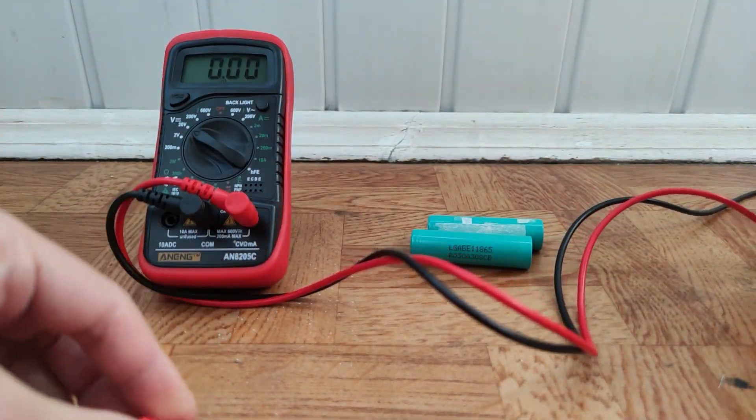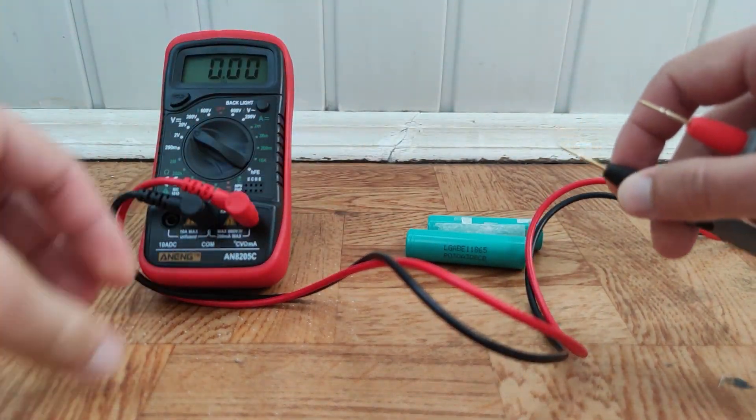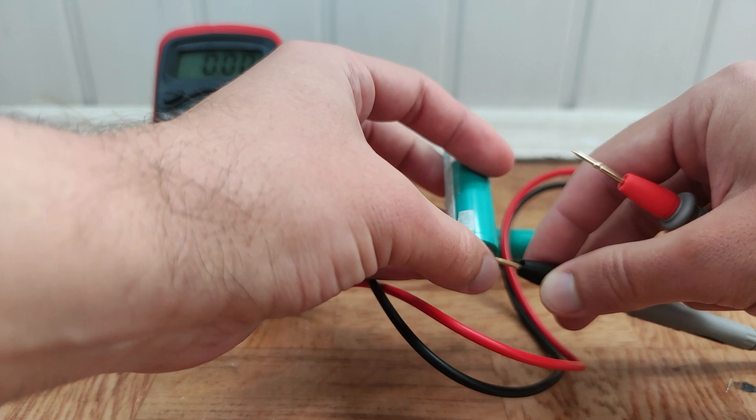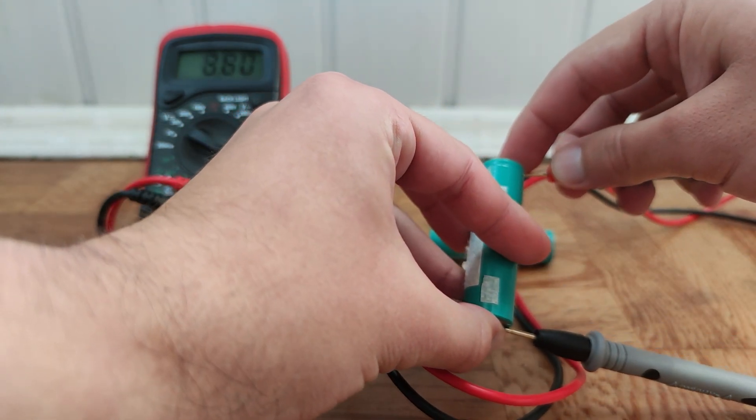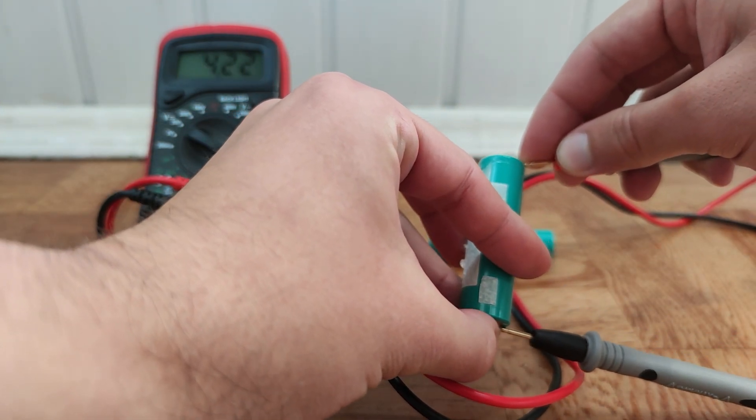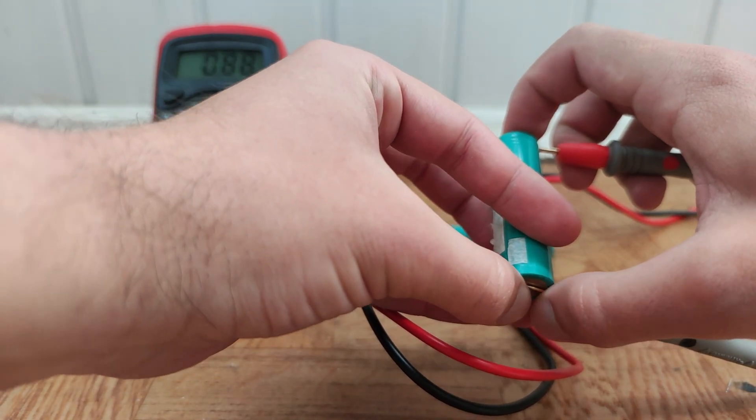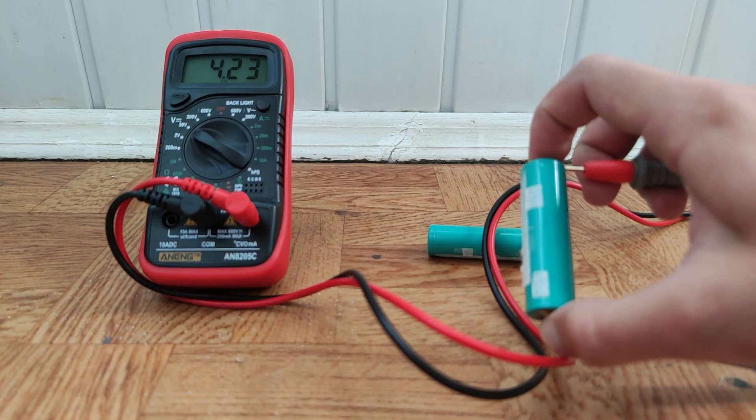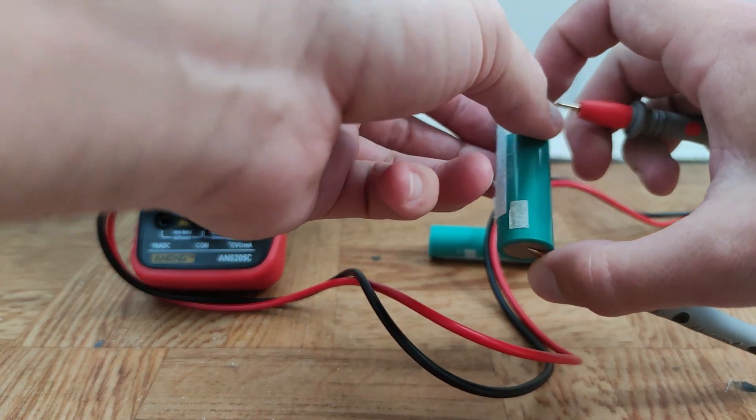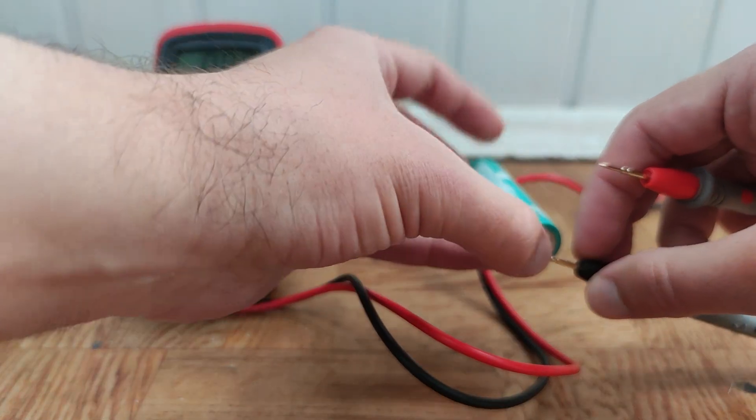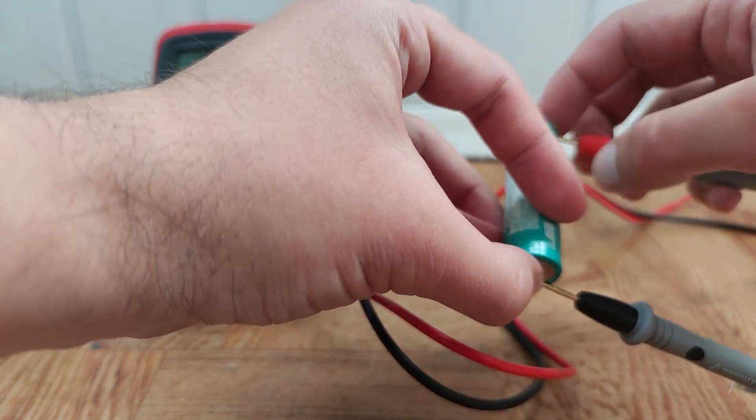And now two batteries already charged, and let's check voltage. 4.23, 4.23. I think it's good voltage for these batteries, so it's still alive, and I can reuse it.